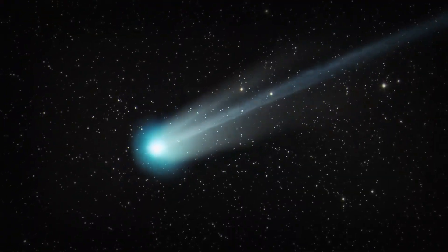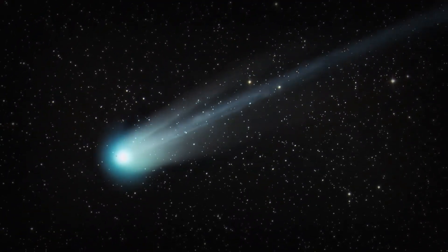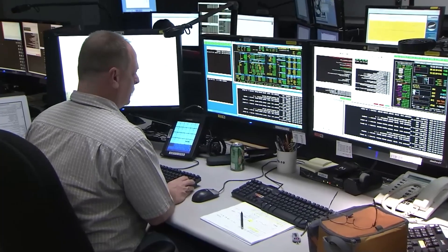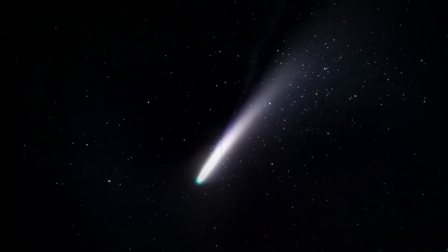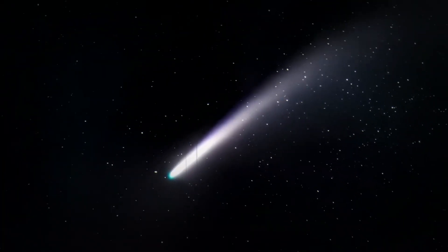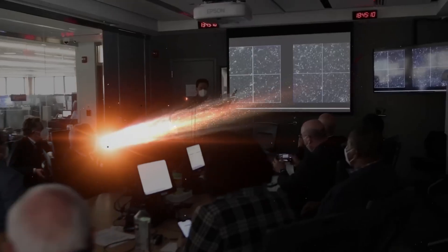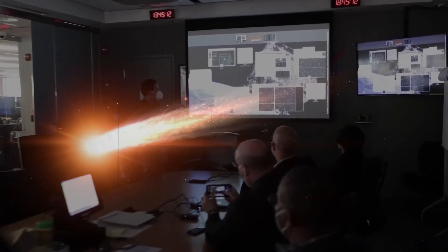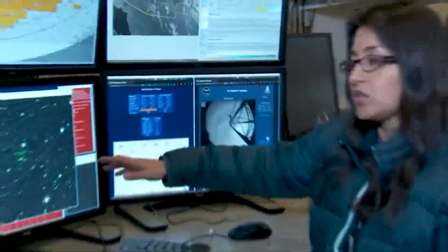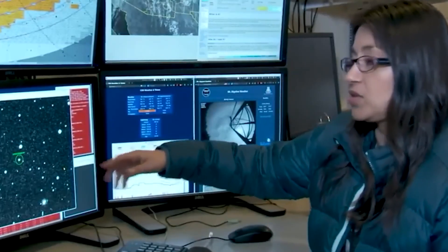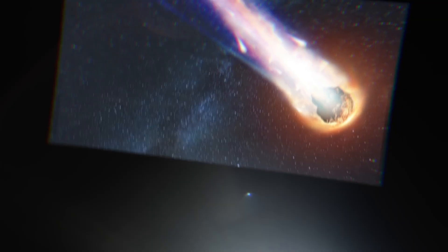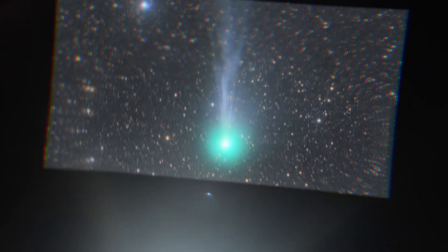An object from another star known as 3i Atlas has been analyzed and the results are baffling. This visitor is carrying the chemical signature of its home solar system and it looks nothing like ours. It's made of a bizarre mix of materials that points to a violent and chaotic past. Many people are crazy about what this means for our search for alien life. The thing is, this object might not just be a clue, it could be a warning.